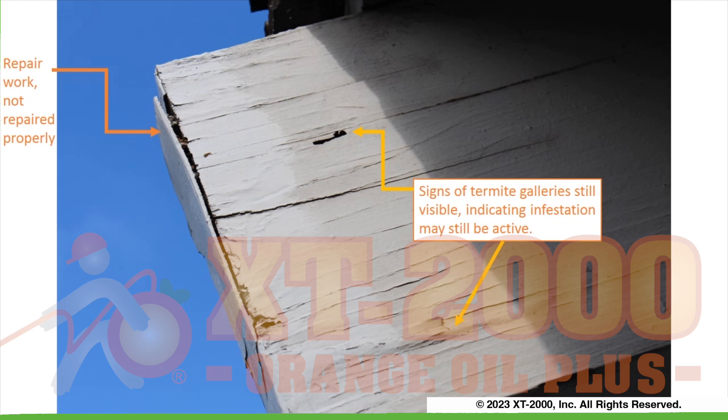Be sure to closely inspect poorly completed repair work. Susceptibility to infestation is greater when termites are presented with access to unpainted or otherwise uncovered wood. In this case, the end of a rafter tail with termite damage was plastered over and painted instead of being properly repaired. Signs of infestation are still clearly visible.